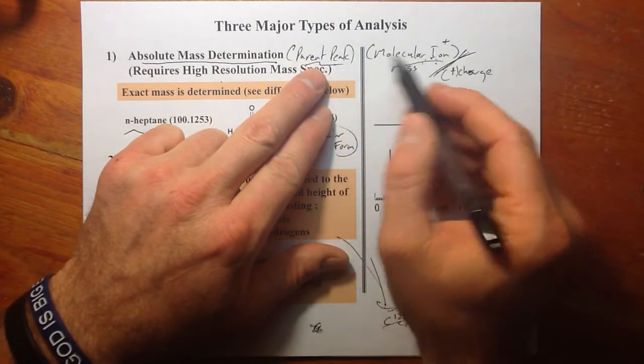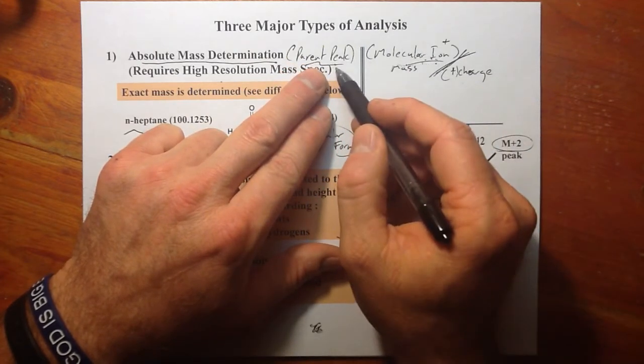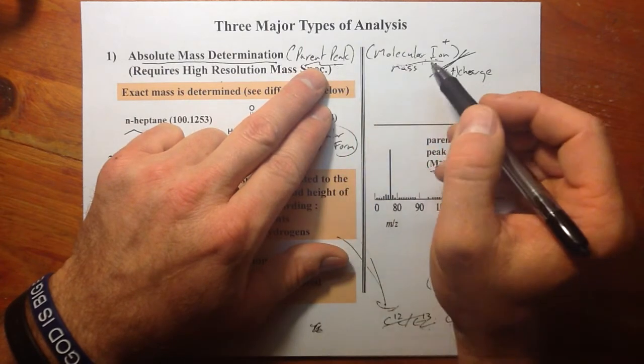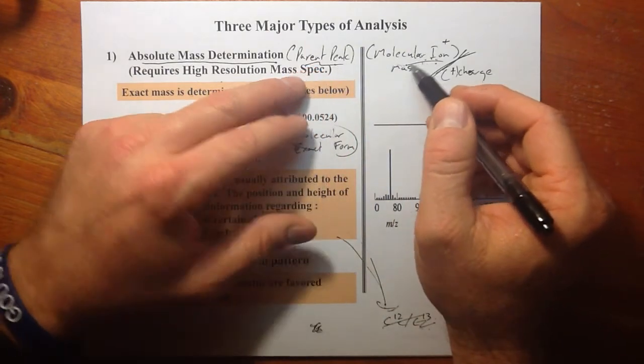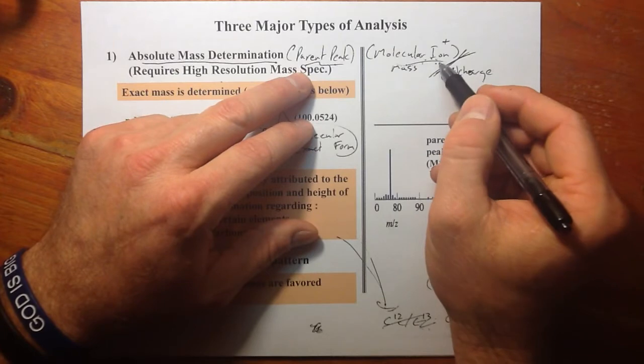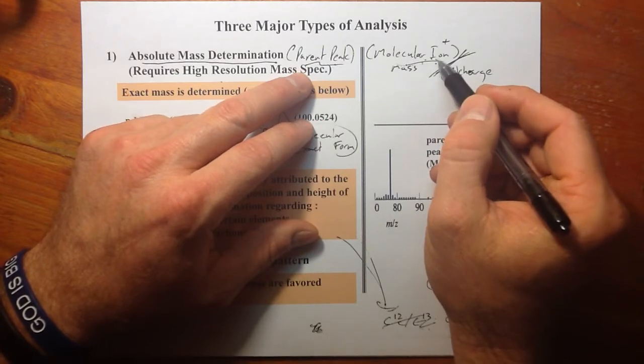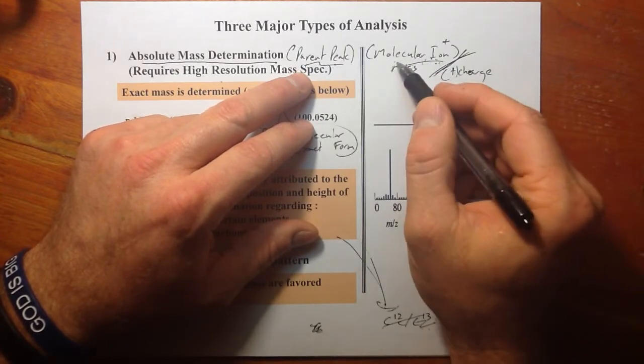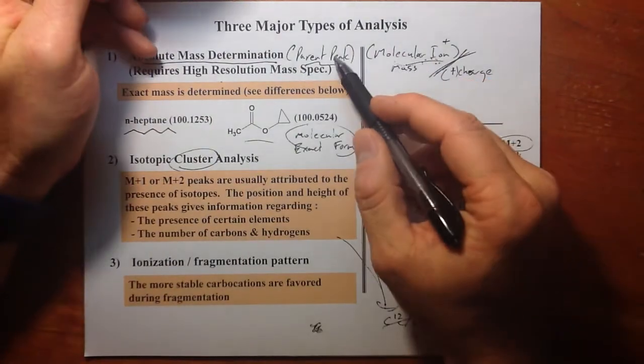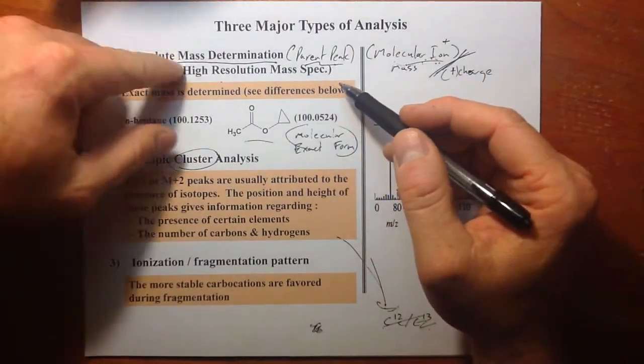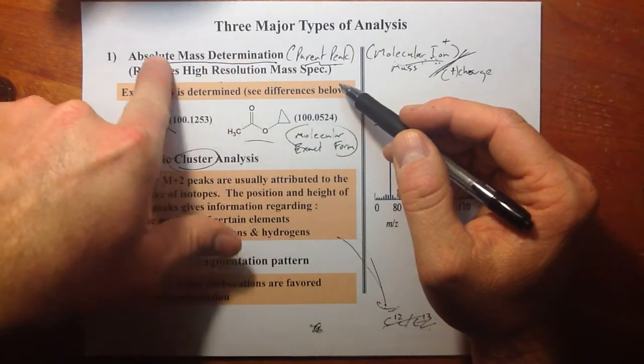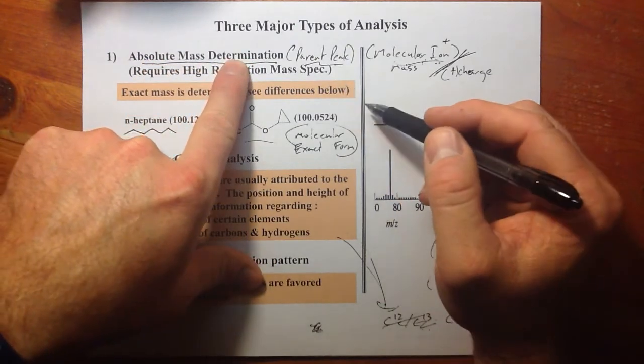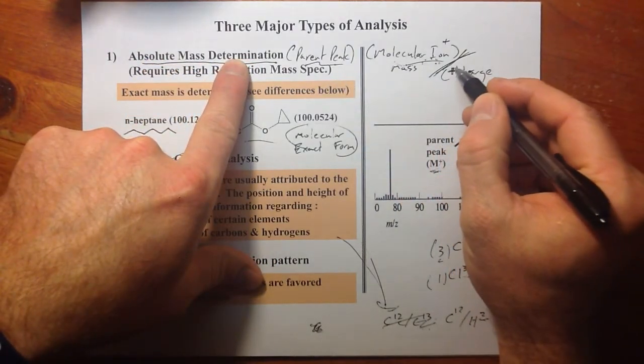These are sort of interchangeable. Molecular ion generates the parent peak in the mass spectra. What is the molecular ion? It's the molecule minus an electron, therefore an ion. It's a molecular ion, molecule minus an electron. This molecular ion generates the parent peak. That's typically where you do this mass determination, this absolute mass determination.